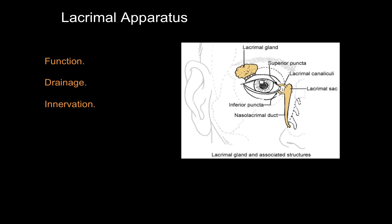The lacrimal apparatus consists of the lacrimal gland in the superior lateral portion of the orbit. Its function is to make tears, which drain down across the eye and then through the superior and inferior puncta, down the lacrimal sac into the nasal cavity. Those tears function to wash the eye, keep it moist, stop it from drying out, and also have immune properties to help fight infection. It drains through the nasolacrimal duct into the nasal cavity, and that lacrimal gland is innervated by the facial nerve — the greater petrosal branch is what causes you to cry.